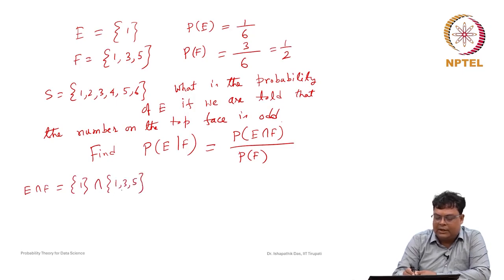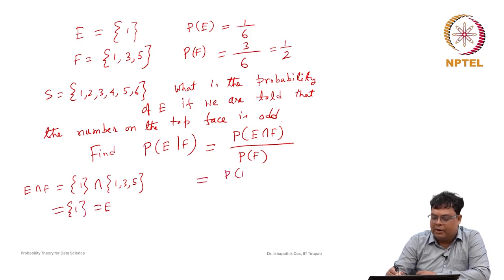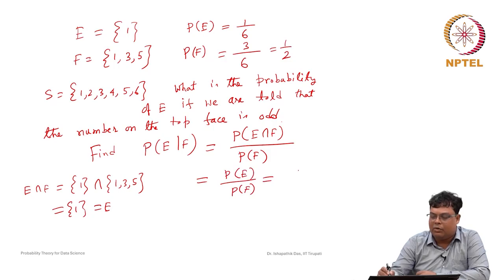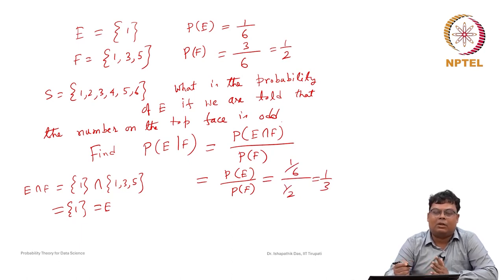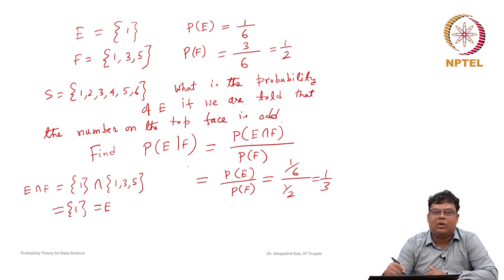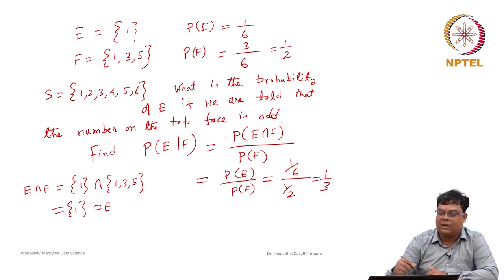Since 1 is a subset of {1,3,5}, the only common point is {1}, which is nothing but E itself. So P(E∩F) = P(E). Therefore P(E|F) = P(E)/P(F) = (1/6)/(1/2) = 1/3. This result from the definition is consistent with our intuition.